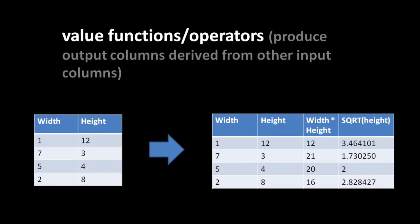In the relational model, the order of rows in tables is not a facet of the data. However, when applications query data, quite often we want those rows in some kind of order - say, alphabetical - for presentation purposes. Relational databases do allow us to request our queries come back in a certain order. Even if the data as stored in the database has no order, when we query it we can specify the order in which it's presented.